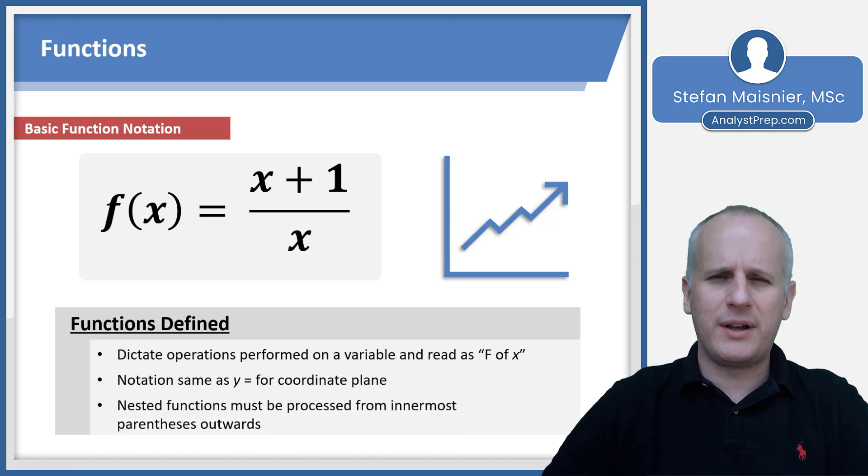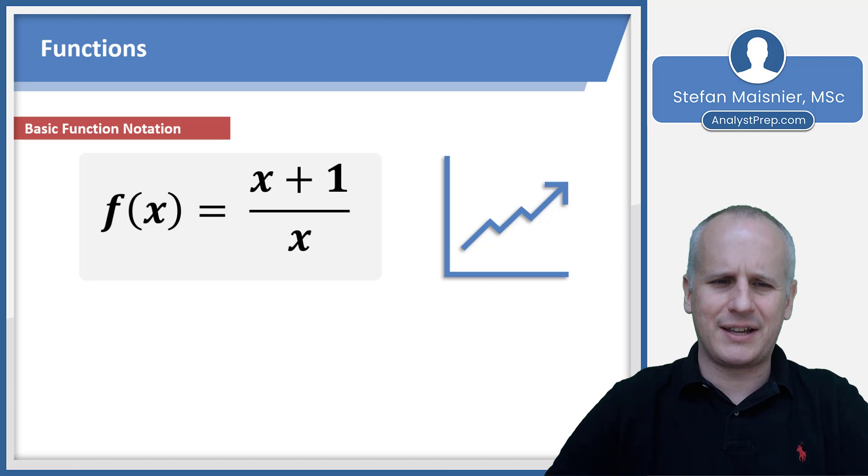When you have what are known as nested functions, those are going to have to be processed from the innermost parentheses outwards. That's because you have your PEMDAS, or parentheses first order of operations, and you have to work from the inside parentheses outwards. Let's take a look at an example using this same structure, such as f of f of two.